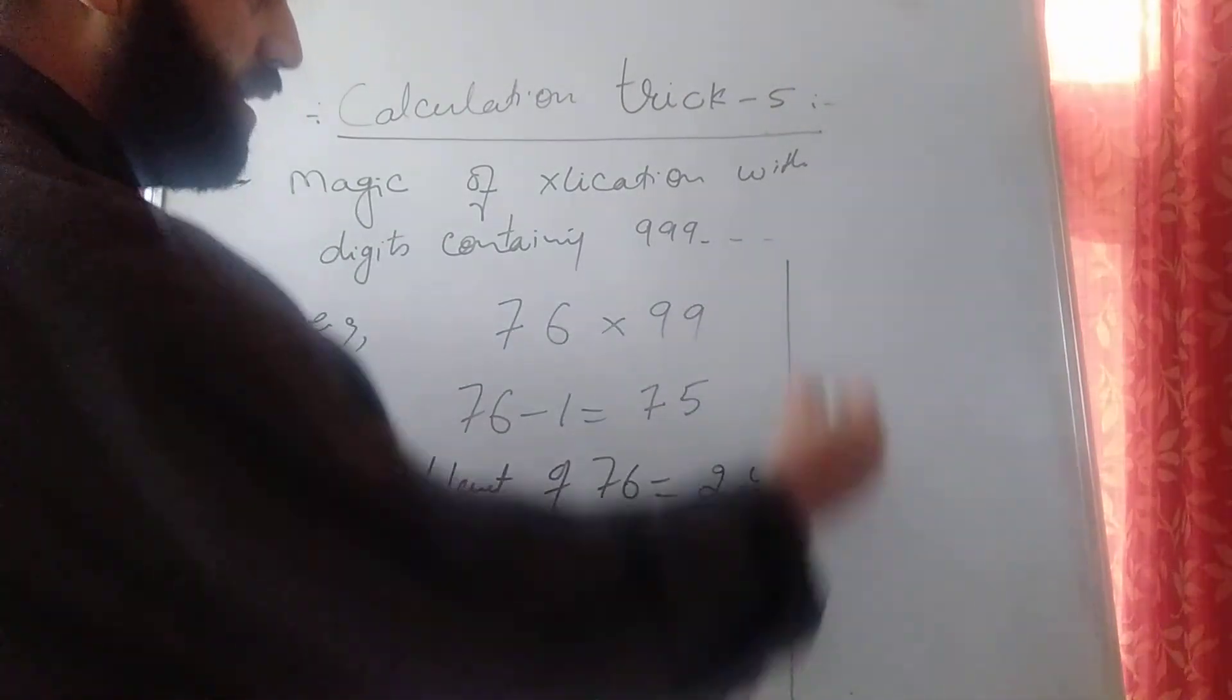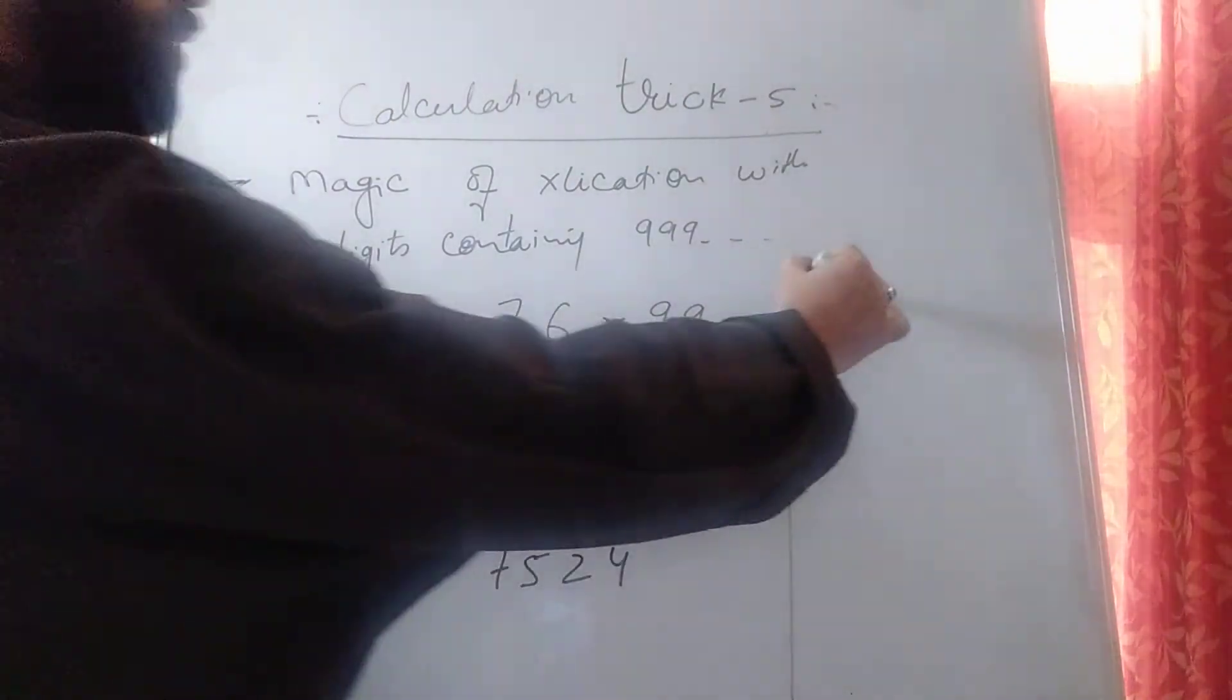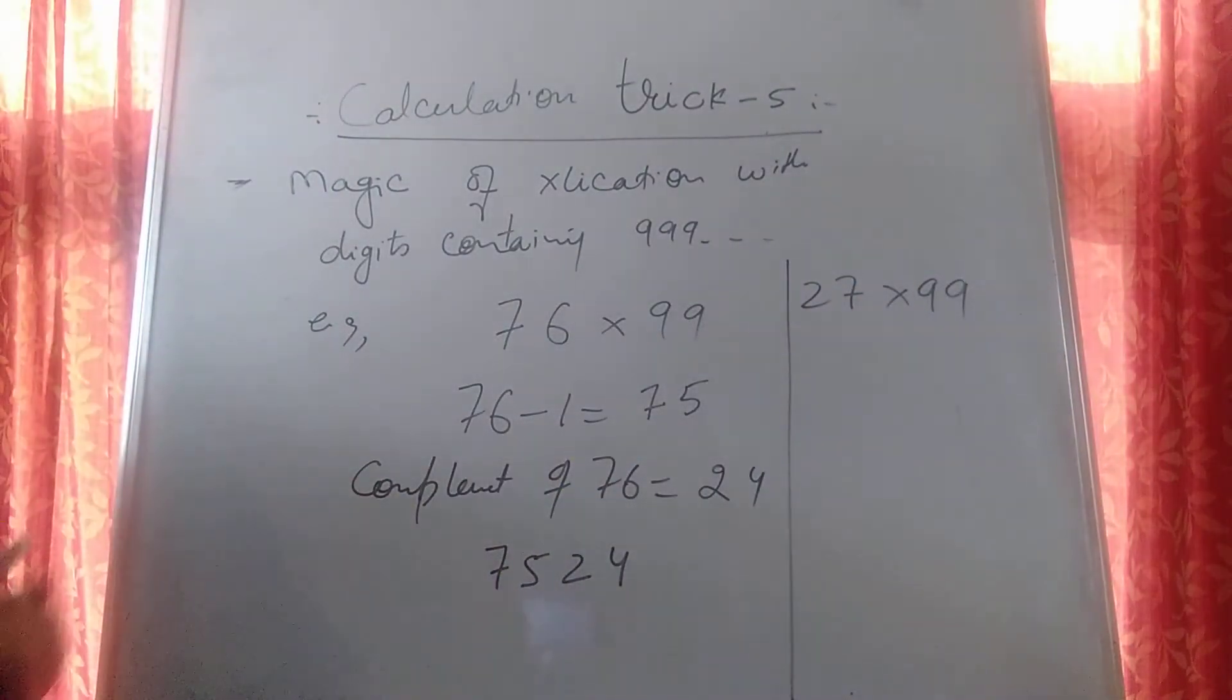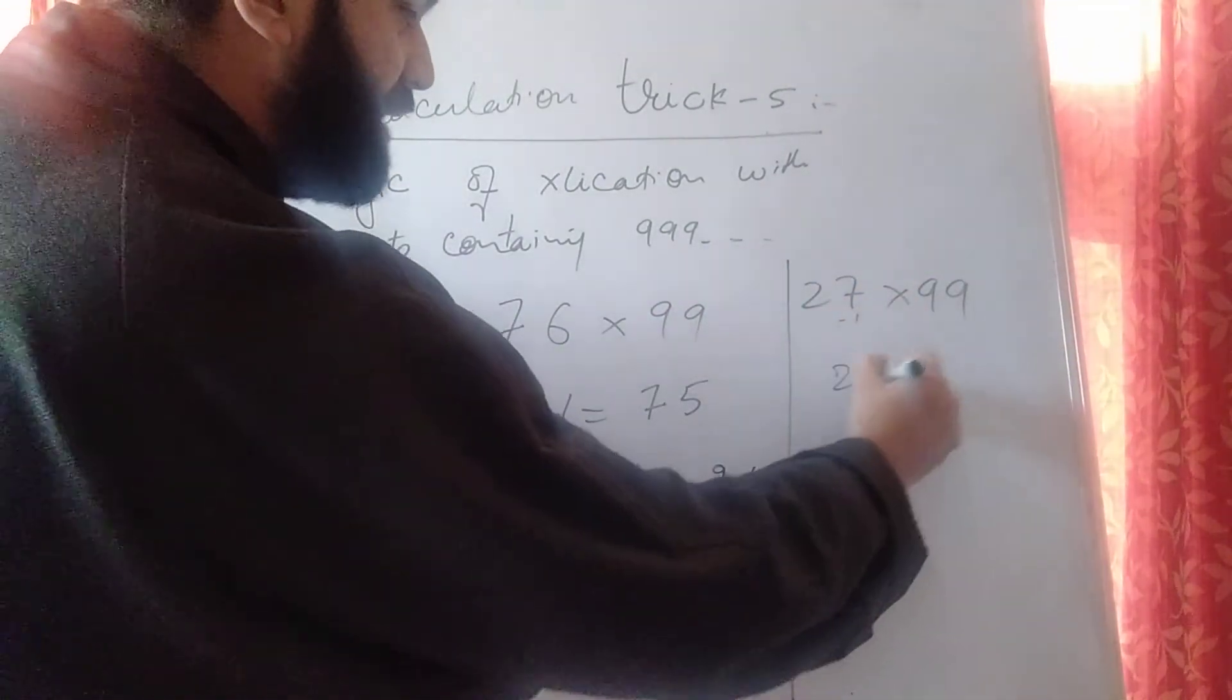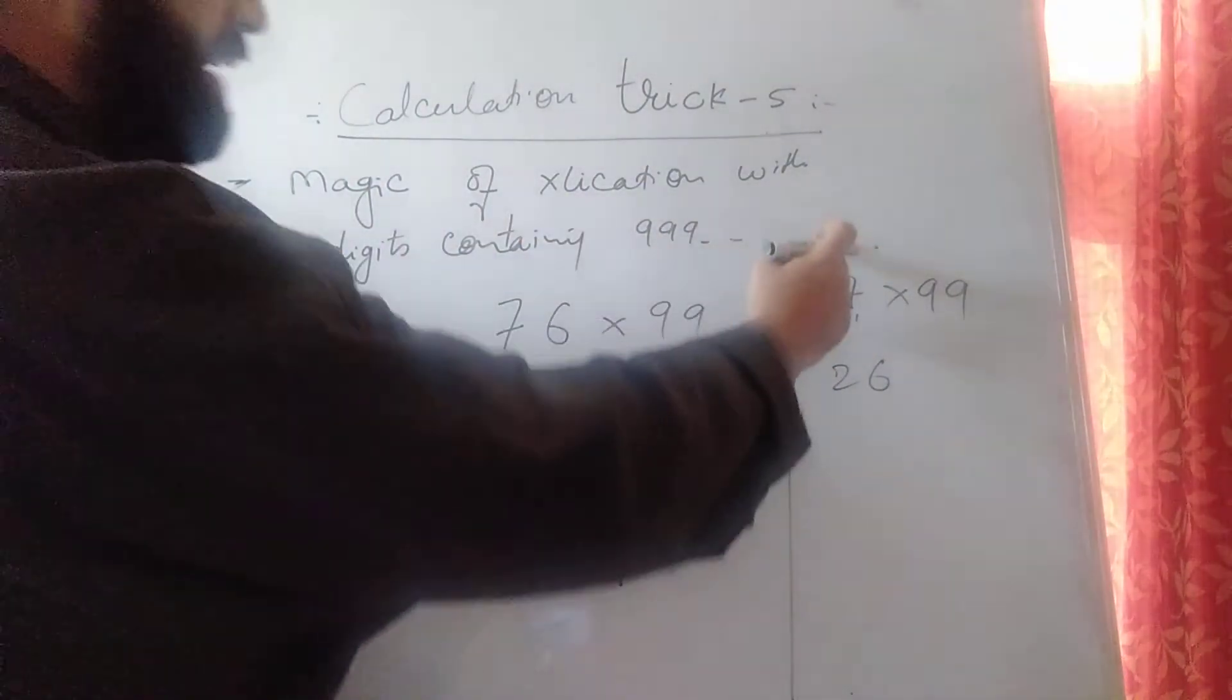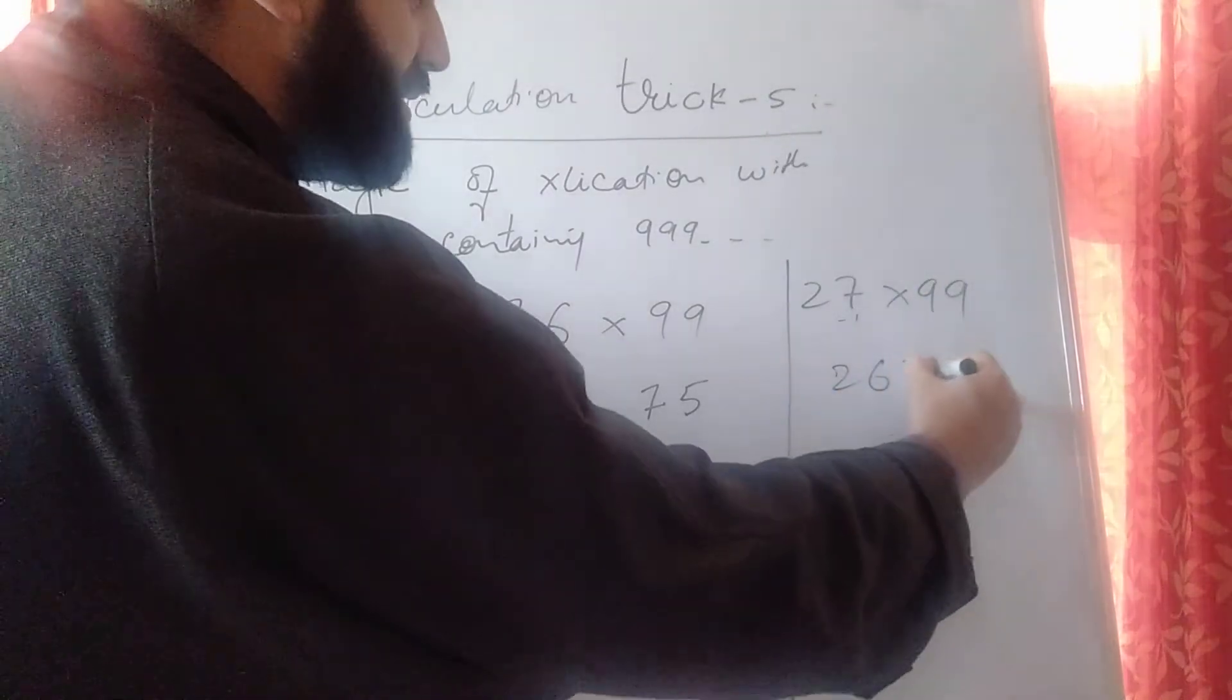Anything you can do. Take a number 27 multiplied with 99. What is 27 minus 1? It's 26. What is 10 minus 7? 3. 9 minus 2? 7. So it's 2673.